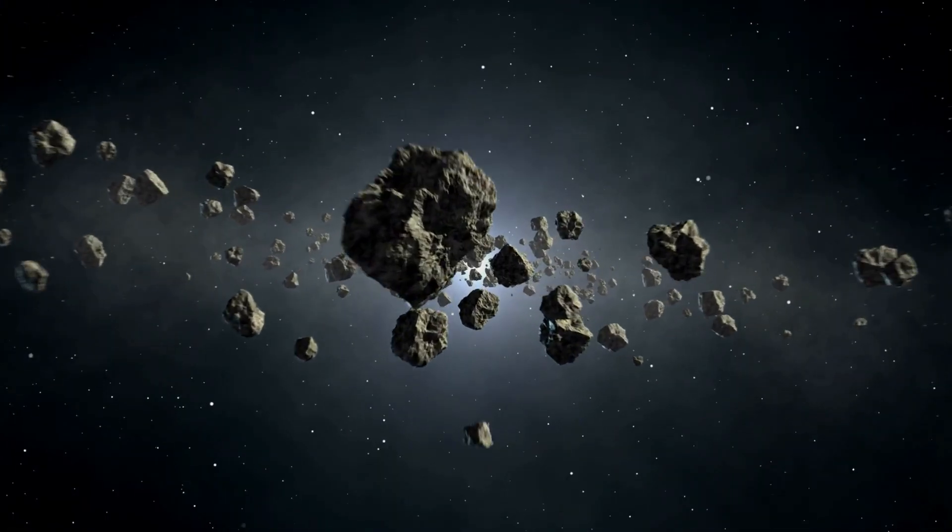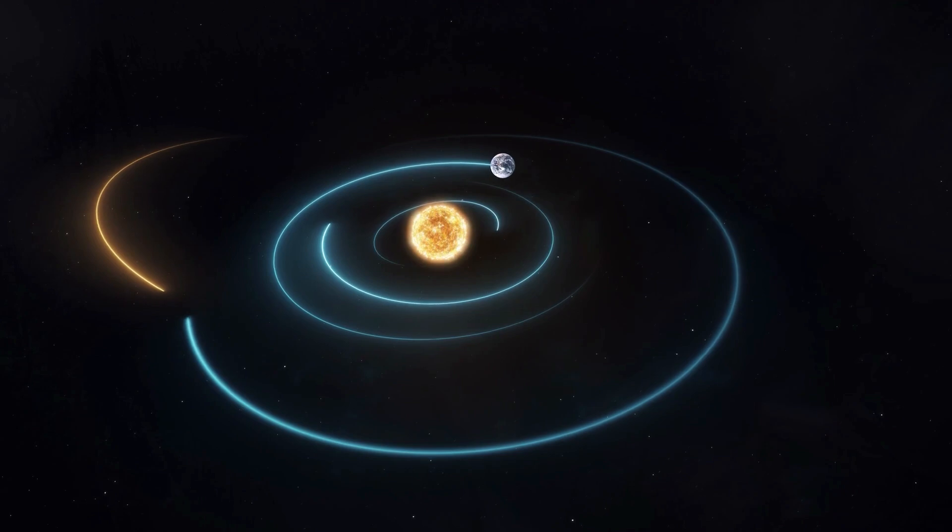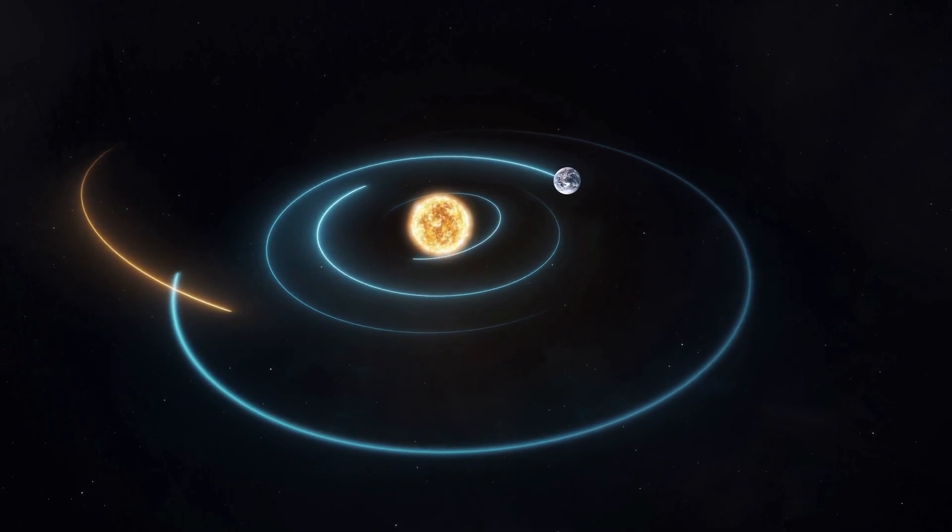Before approaching the asteroid belt that divides the inner solar system from the outer, the comet has traveled a great distance, traveling through the orbits of Neptune, Uranus, Saturn and Jupiter.